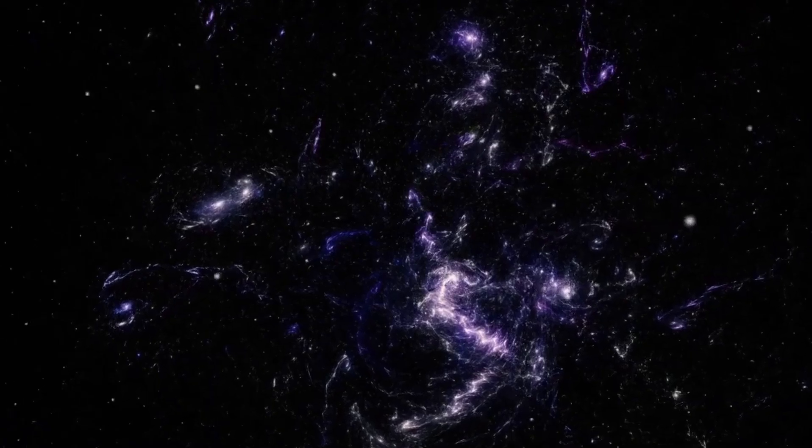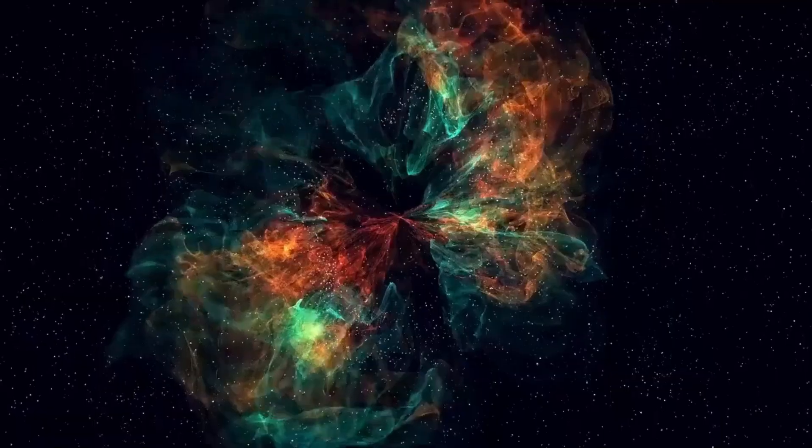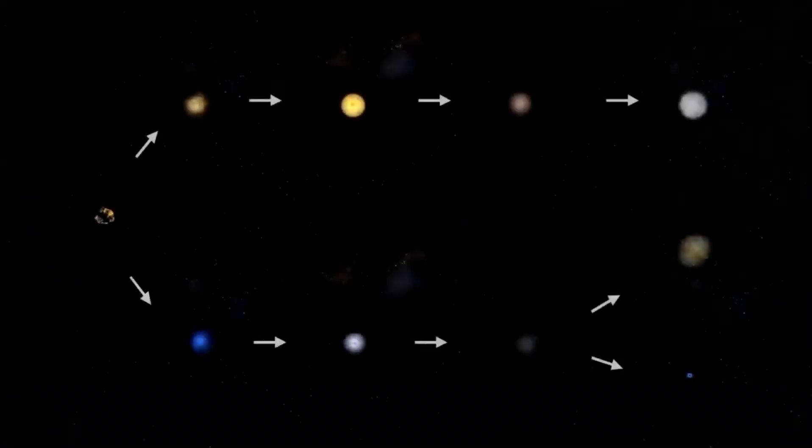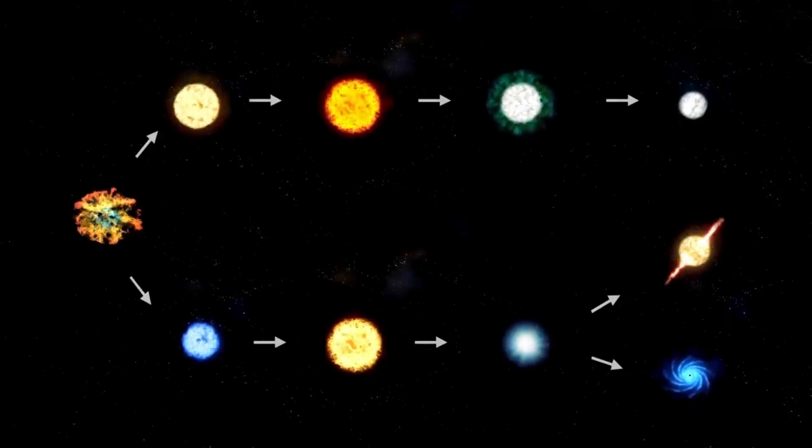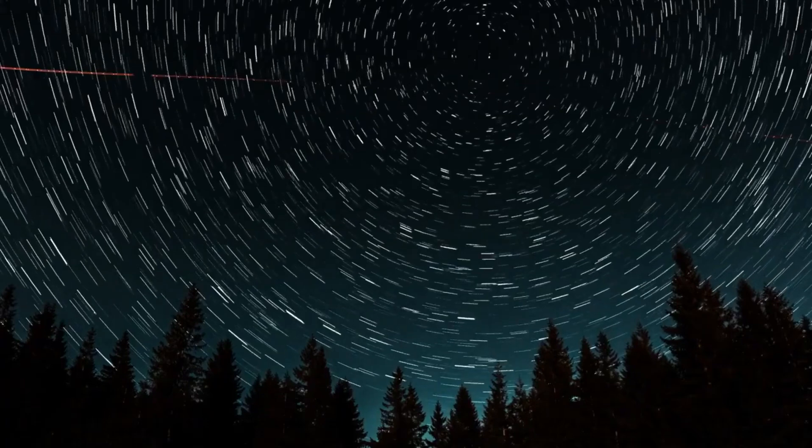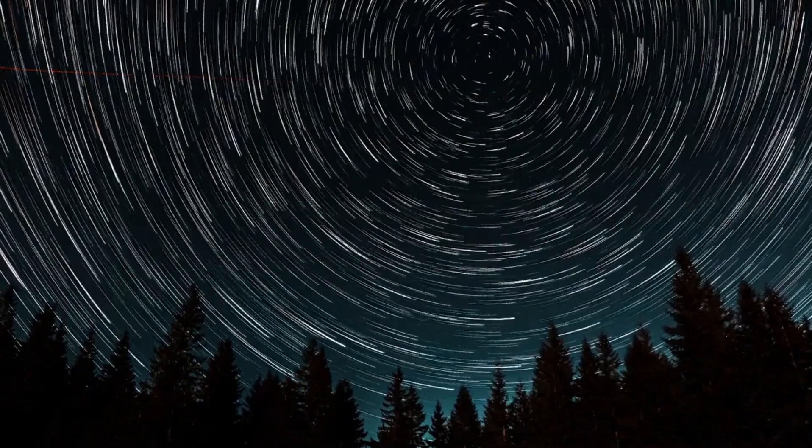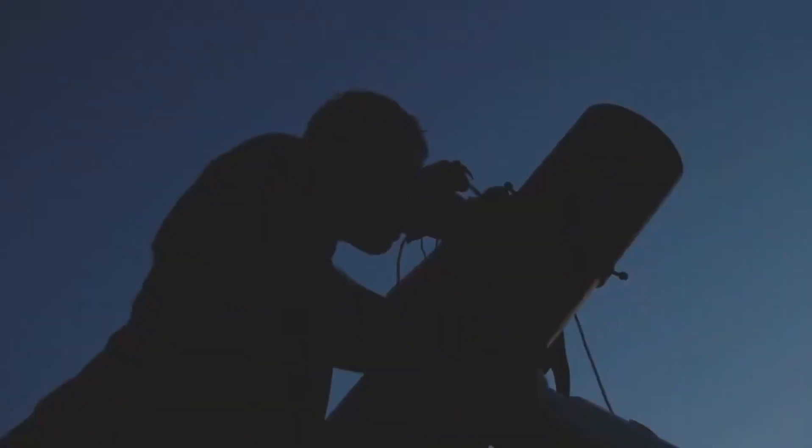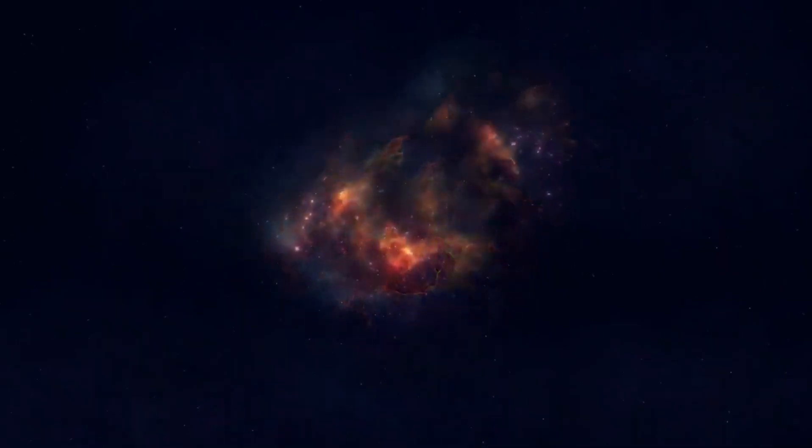If Betelgeuse were to go supernova, it would be a once-in-a-lifetime event for humanity. The explosion would be visible to the naked eye, even in daylight, and would remain bright in the night sky for weeks or even months. The light from the supernova would travel 650 years to reach Earth, meaning that the explosion would have actually occurred in the 14th century. For astronomers, the event would provide an unprecedented opportunity to study the life cycle of massive stars and the processes that lead to supernovae. It would also offer insights into the formation of neutron stars and black holes, the remnants left behind after a supernova.